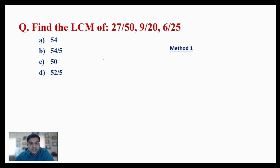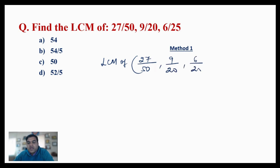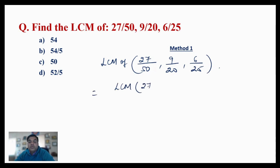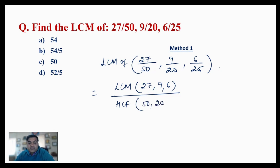Method 1: To find the LCM of three numbers — 27/50, 9/20, and 6/25 — we will find the LCM of the numerators, which are 27, 9, and 6, and we will find the HCF of the denominators, which are 50, 20, and 25.